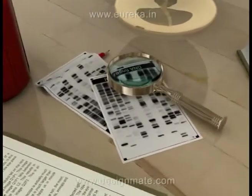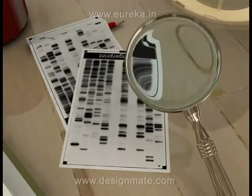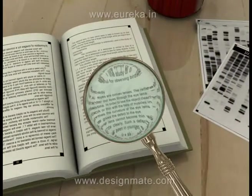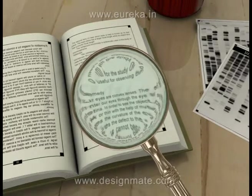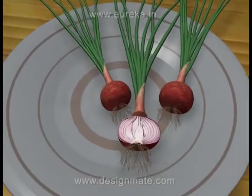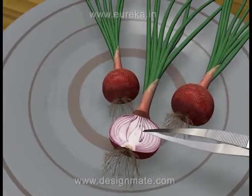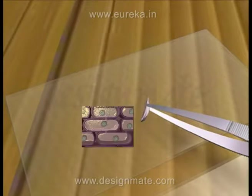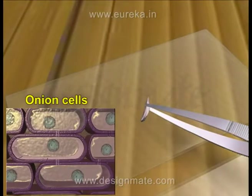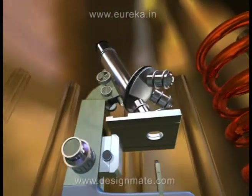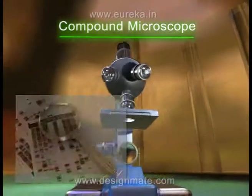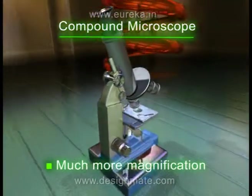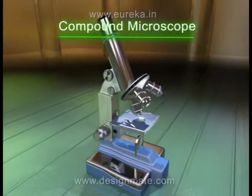We have already studied that a magnifying lens is a simple microscope which is used to magnify small objects into big ones. Just imagine how exciting it would be if we get a device with which we can clearly see the minute objects like cells which cannot be seen with our naked eyes. That is the magic done by a compound microscope. A simple magnifier has limited magnification, but a compound microscope has much more magnification. Now let us study the compound microscope in detail.